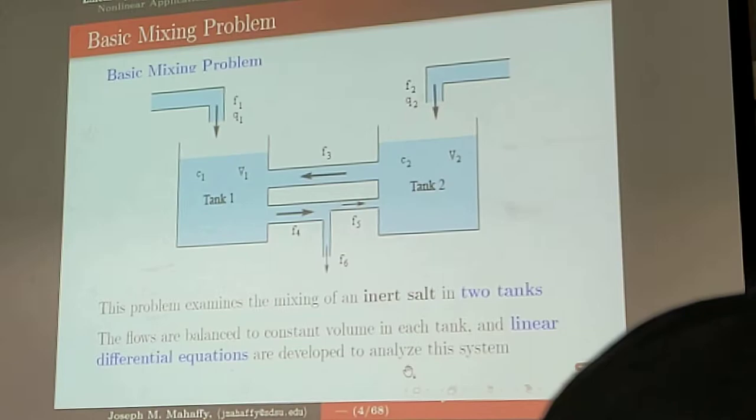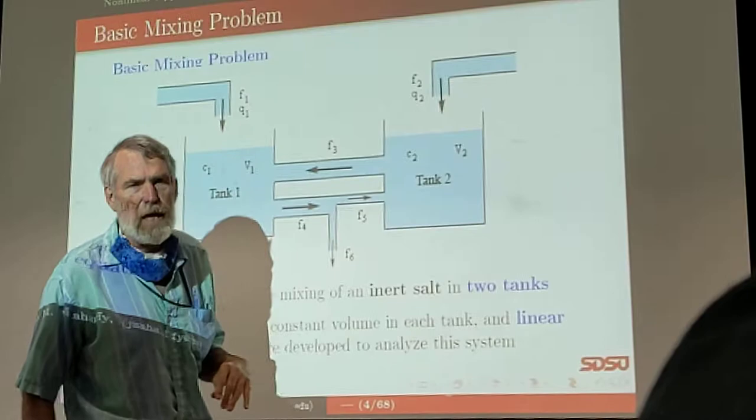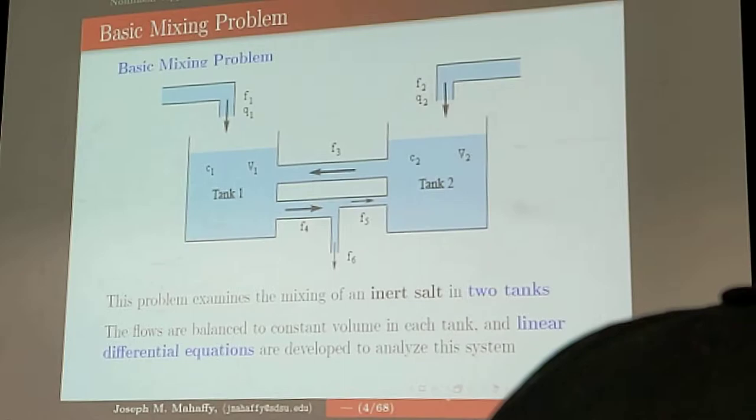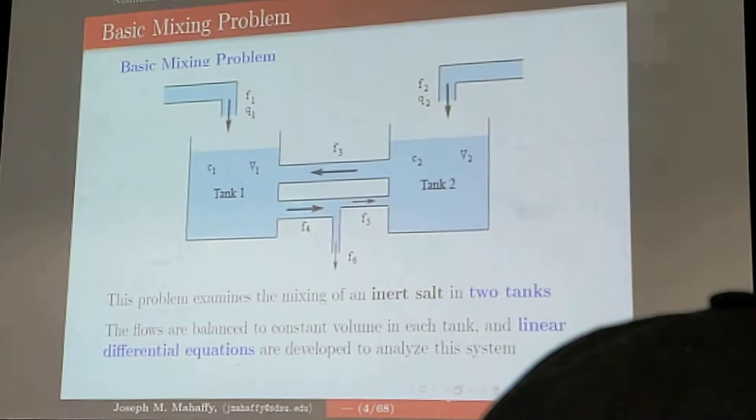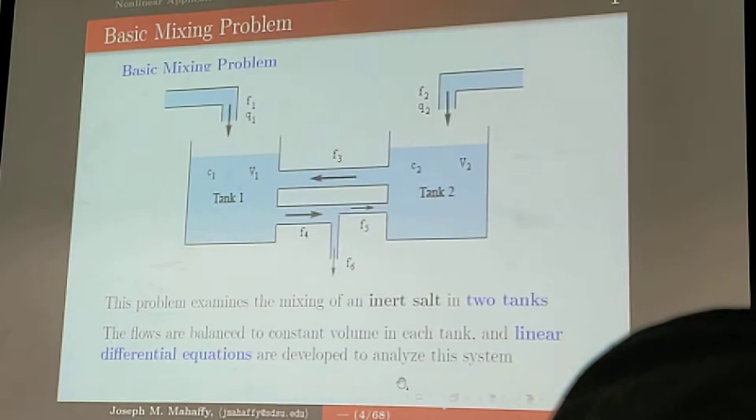Similarly, flow 2 plus flow 5 better equal to flow 3. So we're going to have these balanced equations because we're going to, just like in our lake problem, assume that we have constant volumes in each of these particular tanks. So what we want to do then is set up the differential equations, assuming you've got some initial concentrations C1,0 and C2,0 in each of these two tanks.